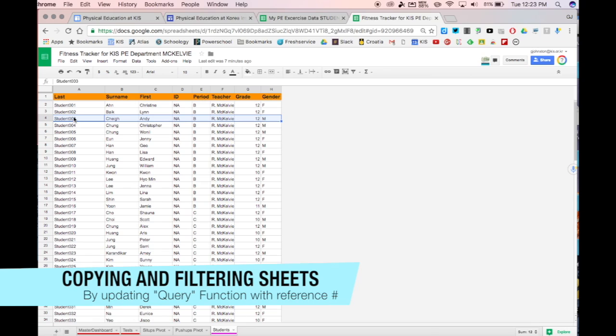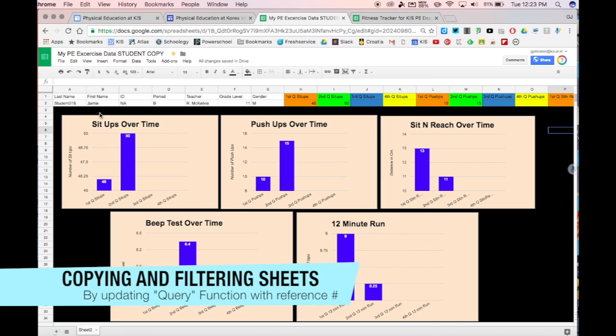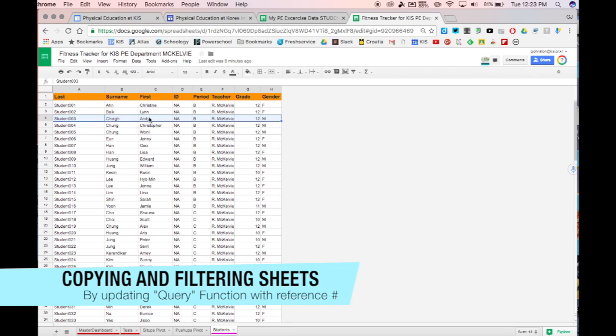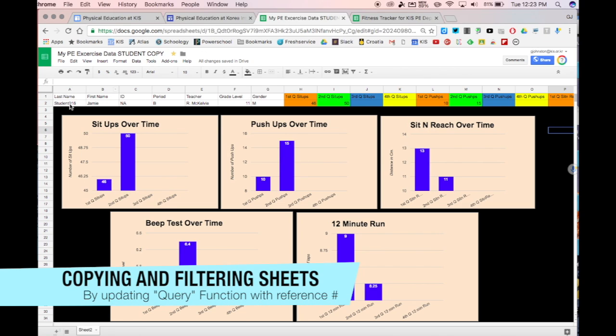You'll see that every student has a unique student reference number. Now in the example here that I have, we see the student Jamie who seems to be student number 16, and if I'm Andy, I want to filter for my data.